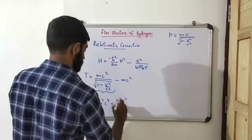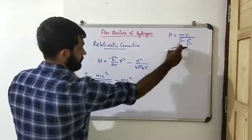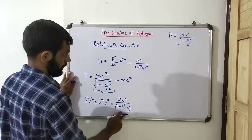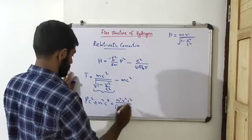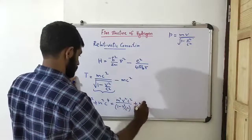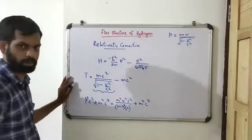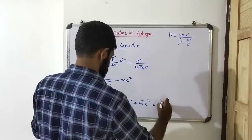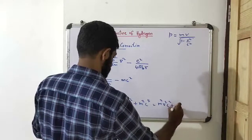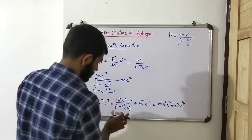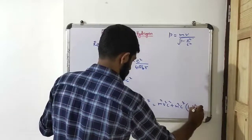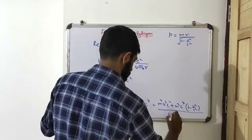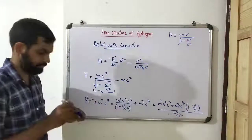We have p squared c squared equals m squared v squared divided by 1 minus v squared over c squared, times c squared. Adding m squared c to the fourth, cross-multiplying gives m squared v squared c squared plus m squared c to the fourth, all times 1 minus v squared over c squared, divided by 1 minus v squared over c squared.